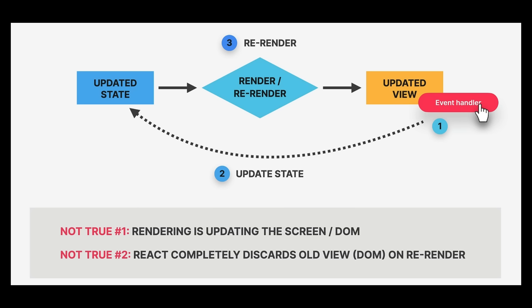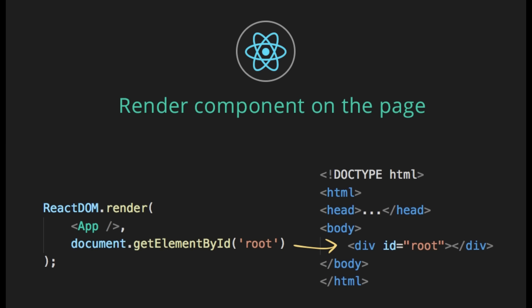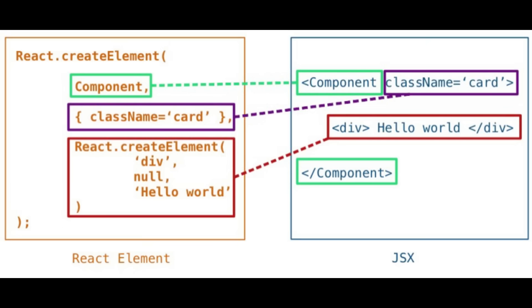Modern React can pause, resume, and discard renders. This is only possible because rendering is pure and side-effect free — React can safely interrupt work without leaving the UI in an inconsistent state. Concurrency allows React to prioritize urgent updates, keep interfaces responsive, and prepare future UI states without blocking the main thread. Everything in React becomes simpler once you internalize this: rendering is just computation, state changes trigger recomputation, and React decides how and when to update the DOM. Components are functions. JSX is syntactic sugar. The virtual DOM is an optimization detail. Effects exist to handle impurity.